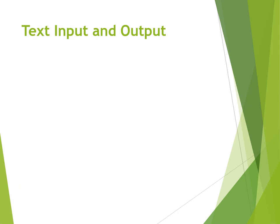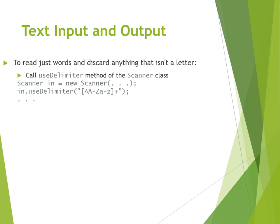Let's see a more complicated example of using the `next()` method. Let's assume you want to read only words and discard anything that isn't a letter — so numbers, punctuation, and any other non-letter characters must be ignored. To do that, you have to call `useDelimiter()` before calling the `next()` method of the Scanner class.